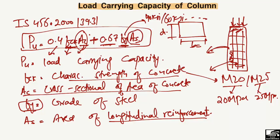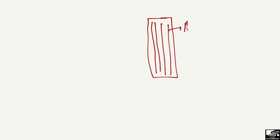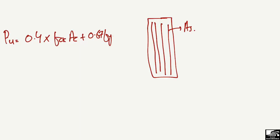AS is the area of the longitudinal reinforcement — that is, the vertical bars in the column. We calculate the total area of these longitudinal bars and put it into the equation. Then we can find the load carrying capacity: PU = 0.4·FCK·AC + 0.67·FY·AS.